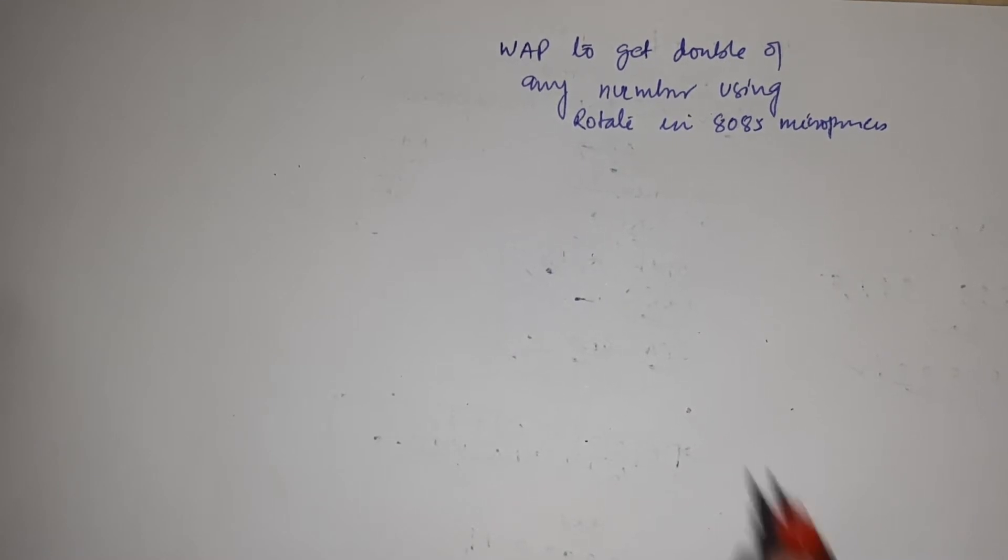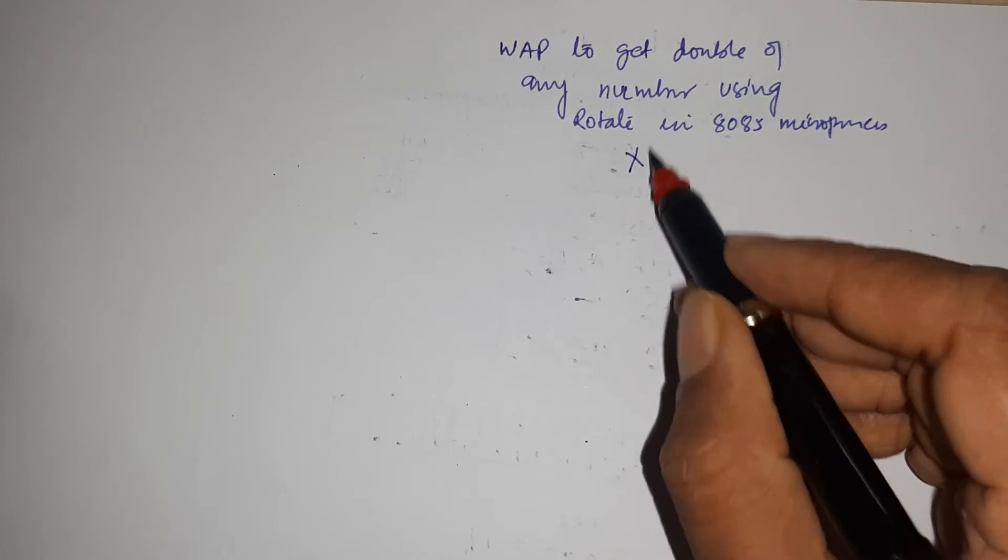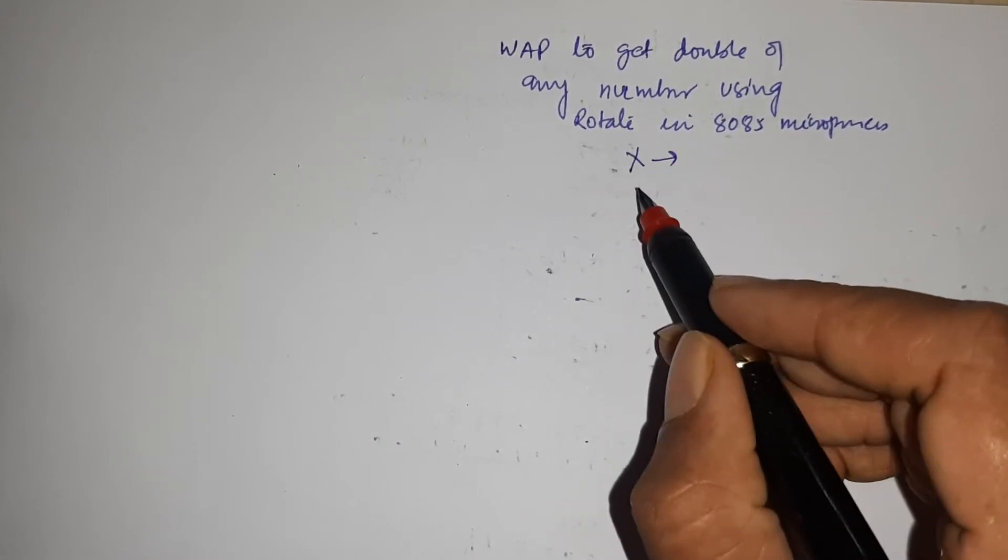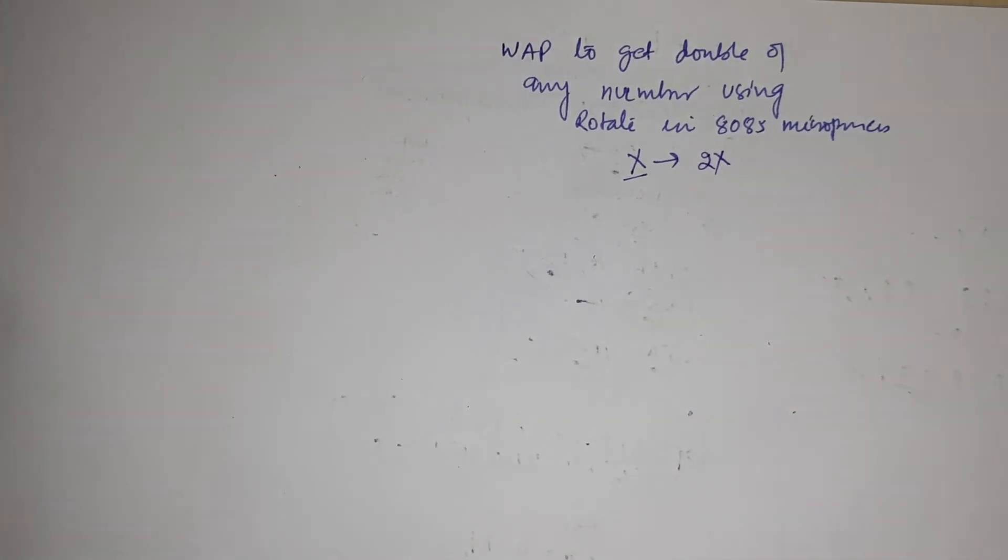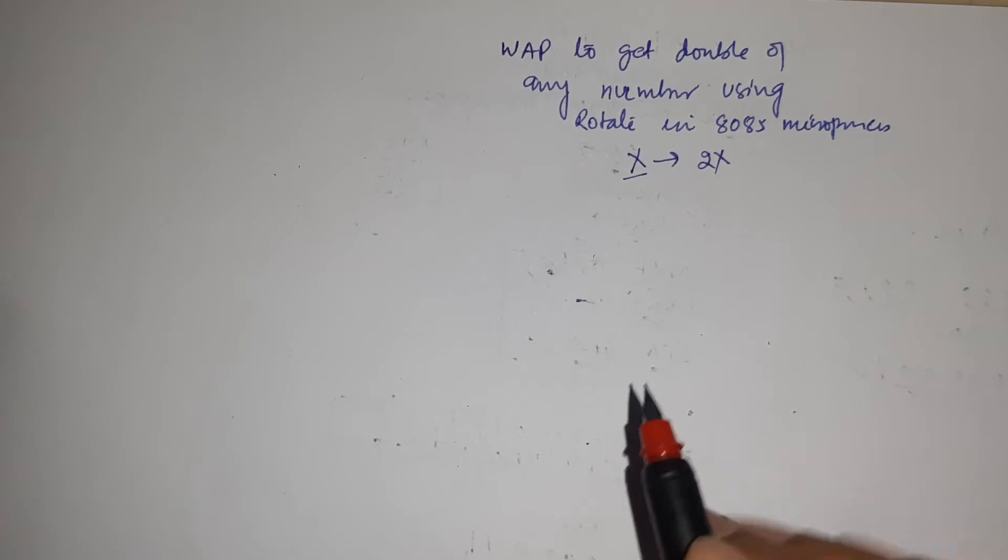The program is that suppose there is a number x and you have to write a program to find 2x by using Rotate. This is very simple and the last program when I was discussing how to get half number, the same concept will be applied here.